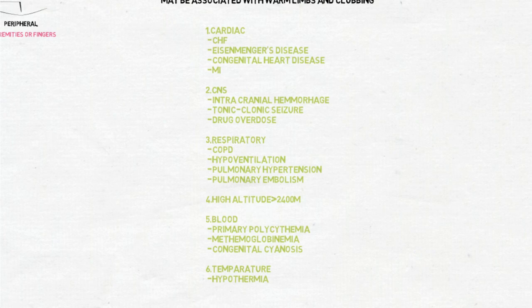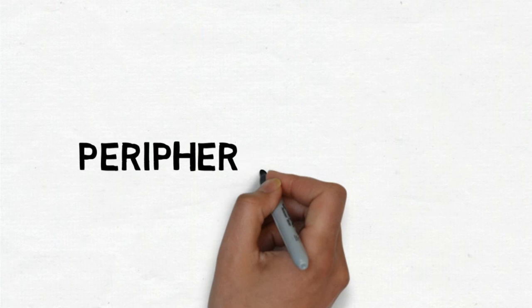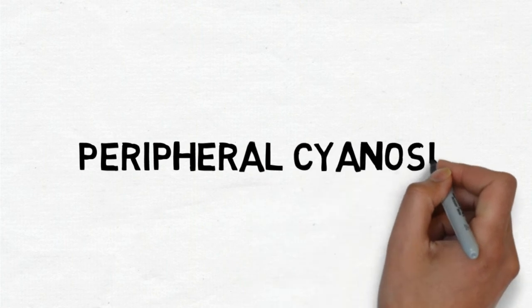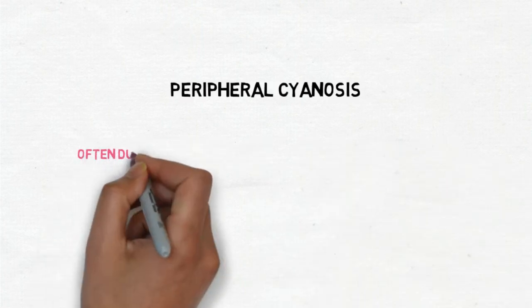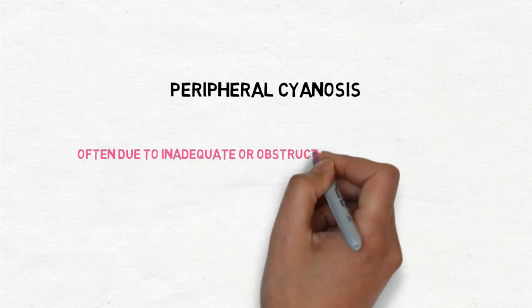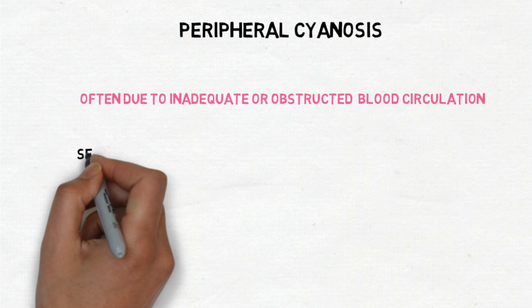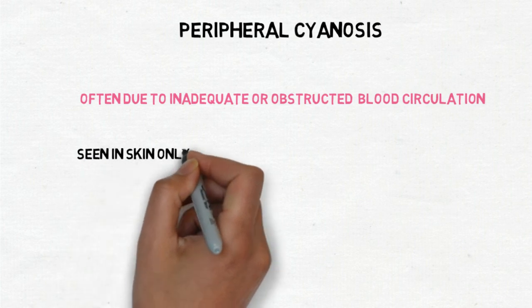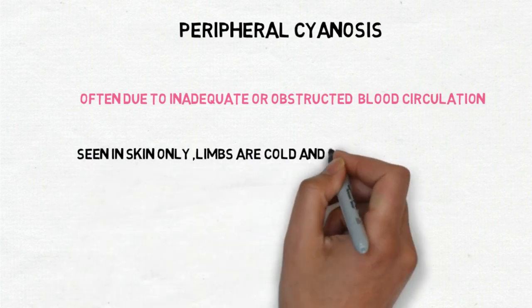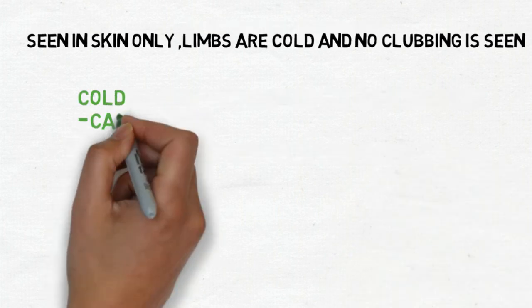Next, what are the causes of peripheral cyanosis? It is often due to inadequate or obstructed blood circulation. It is seen in skin only, limbs are cold, and there is no clubbing seen.